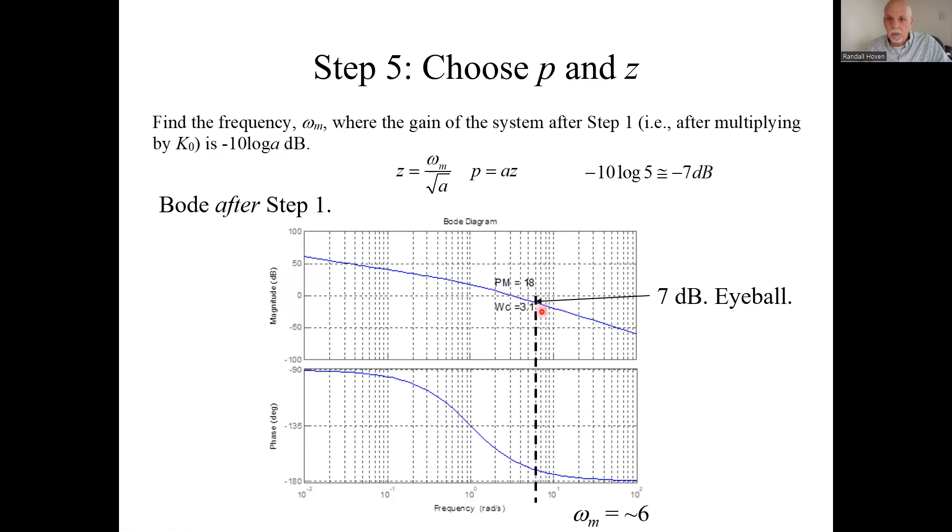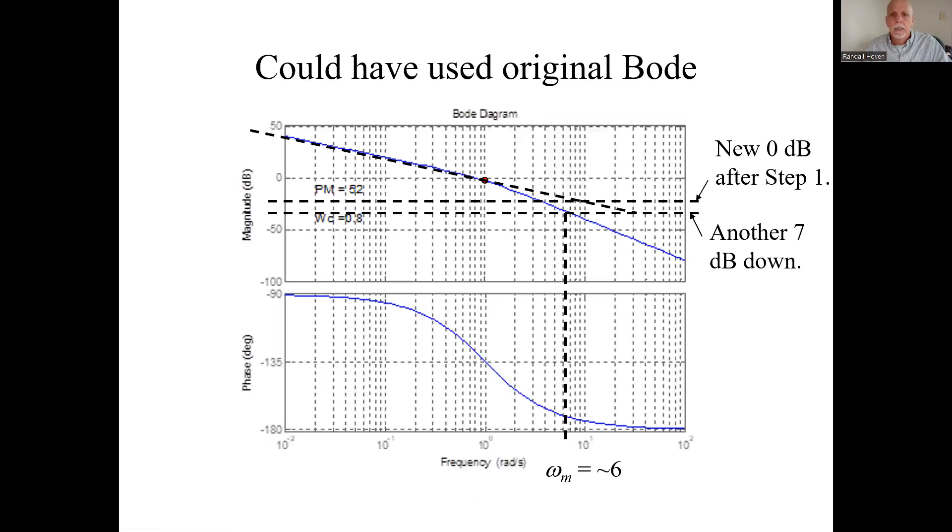You can come up with this gap by a formula, but then you have to read the Bode plot to know what the omega sub m is. If we hadn't redrawn Bode, remember here was our new reference line because we increased the gain. And we need to come down yet another 7 dB. So go across, where does that cross the blue line? Down there. Omega sub m is about six radians per second.